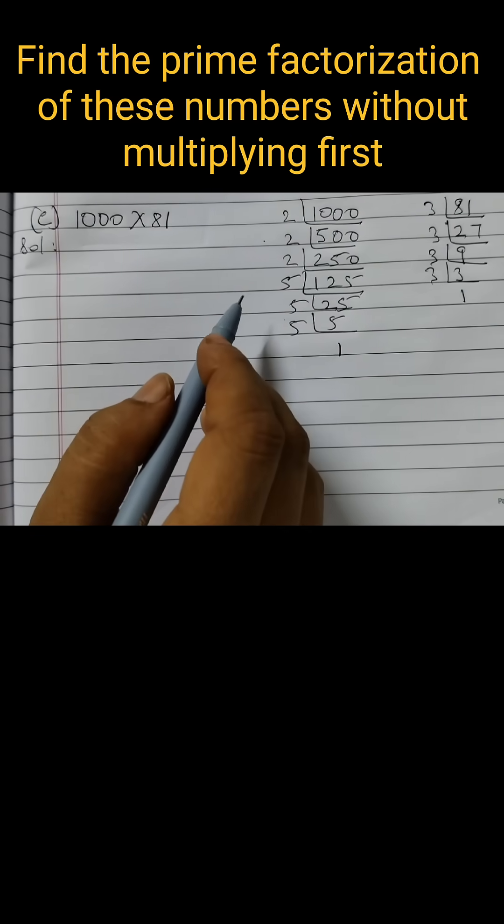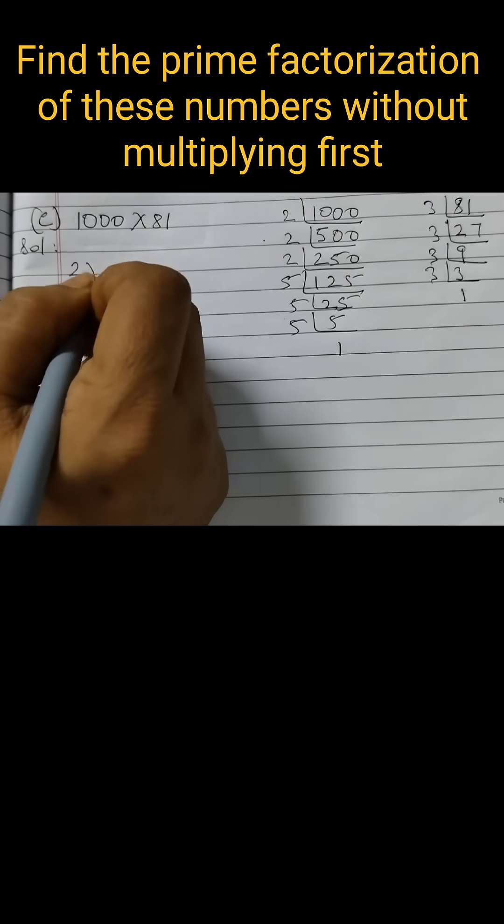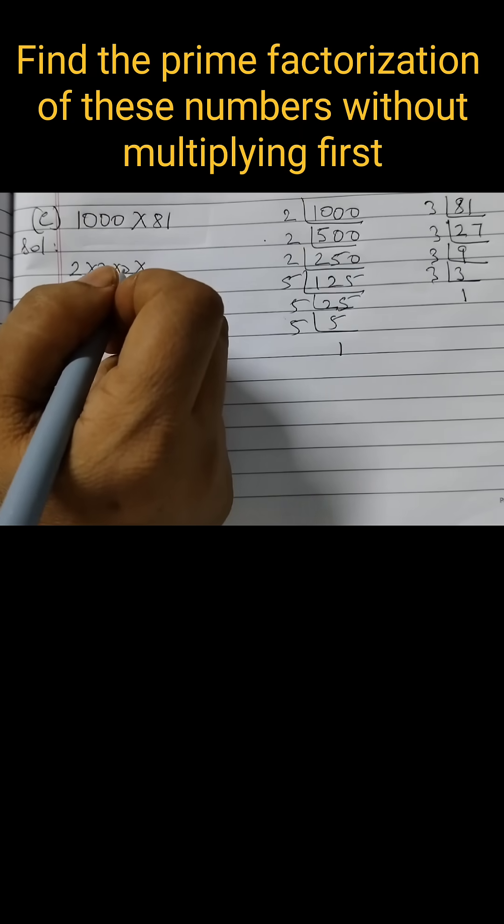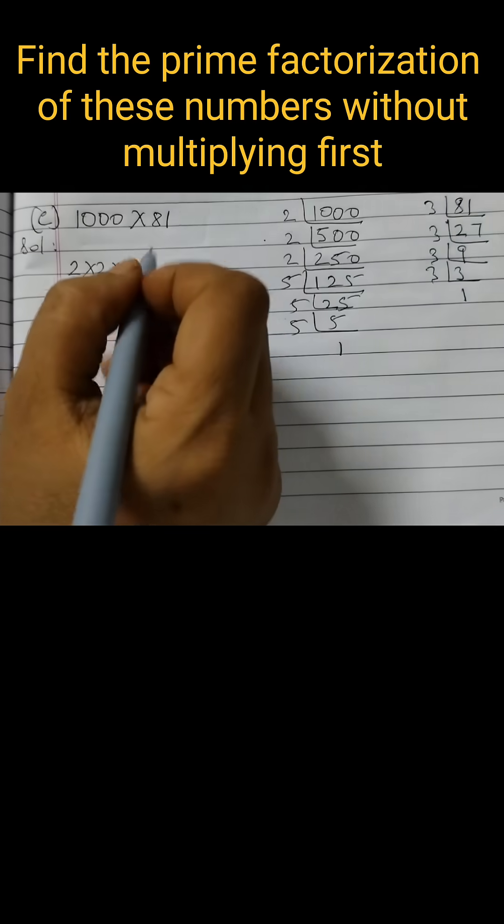Now we will write all the numbers in increasing order. So first 2 × 2 × 2, then we have 3, 1, 2, 3, 4.